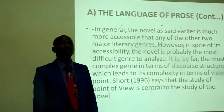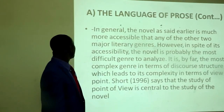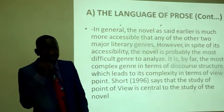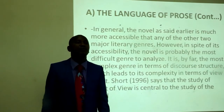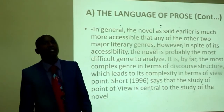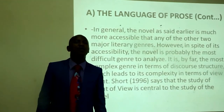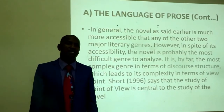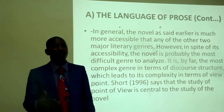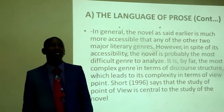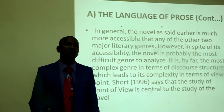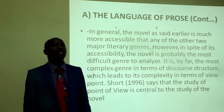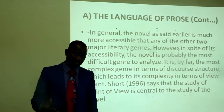In general, the novel is much more accessible than any of the other two major literary genres. However, in spite of its accessibility, the novel is probably the most difficult genre to analyze. It is by far the most complex genre in terms of discourse structure, which leads to its complexity in terms of viewpoint. Schock, 1986, says that the study of point of view is central to the study of the novel.